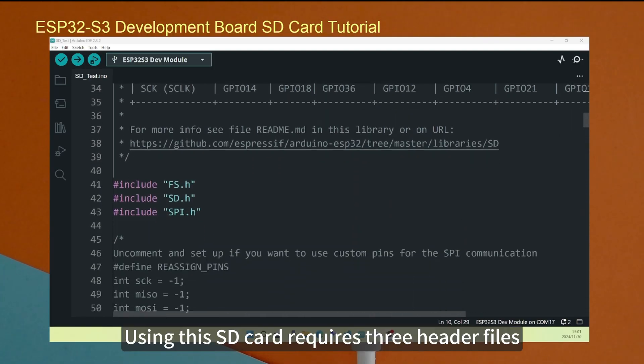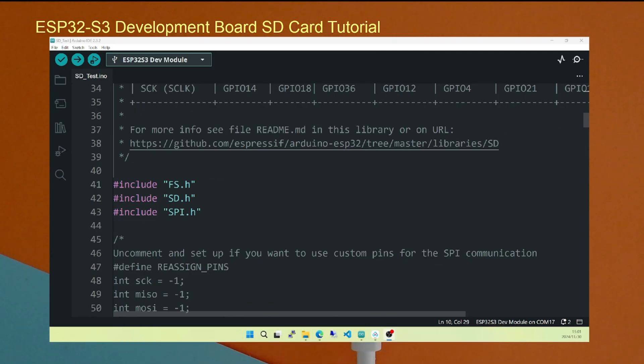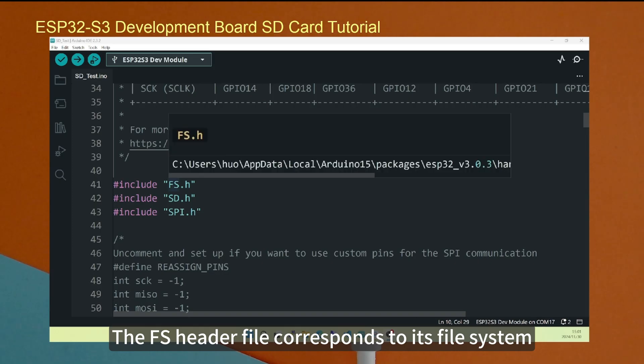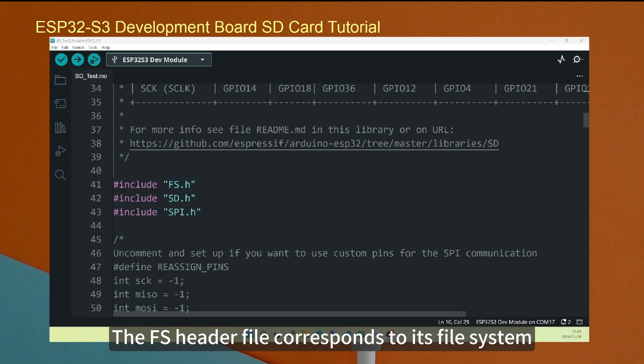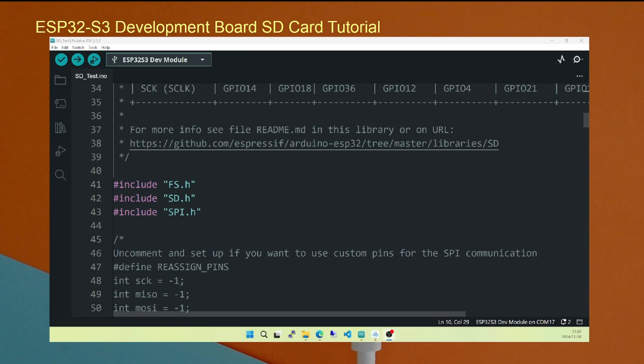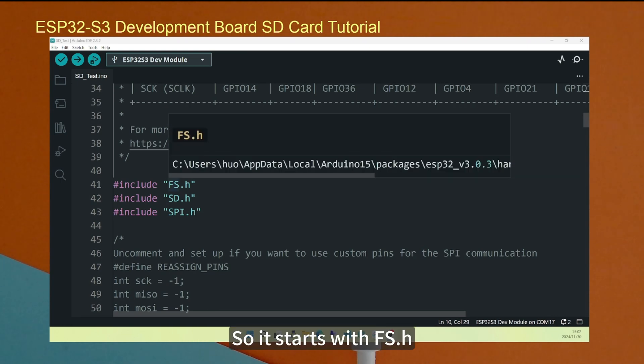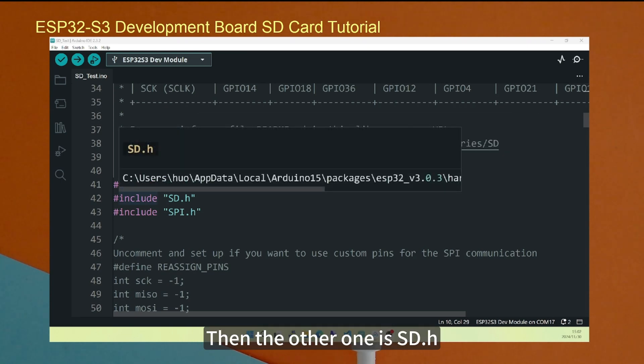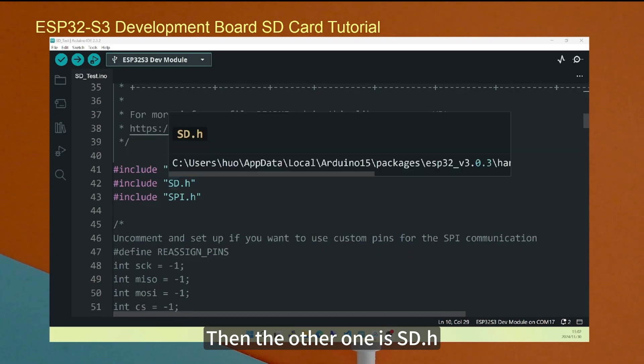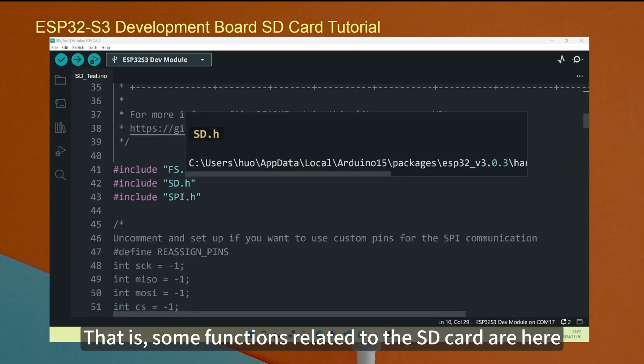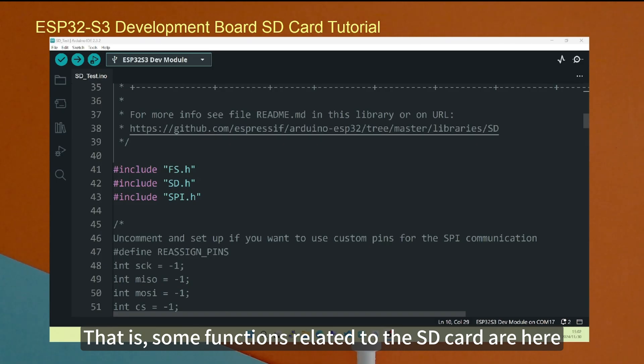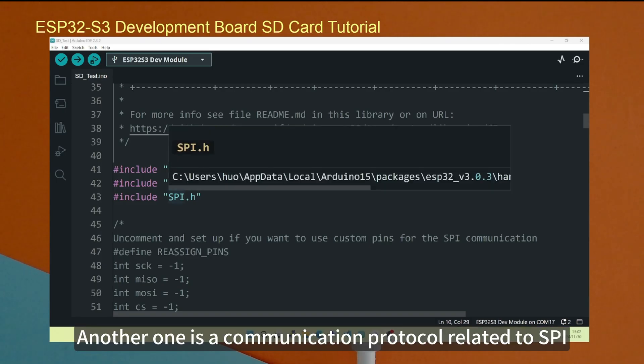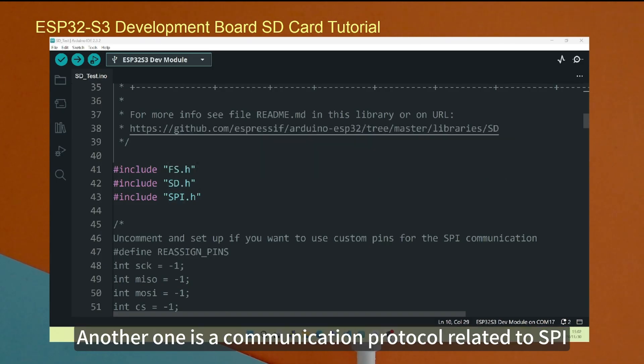Using this SD card requires three header files. One is FS. The FS header file corresponds to its file system, generally a FAT related file system, so it starts with FS.H. Then the other one is SD.H, that is, some functions related to the SD card are here. Another one is a communication protocol related to SPI.